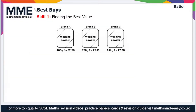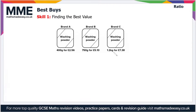Welcome to the Maths Made Easy tutorial on best buys. Best buys is all about finding the best value for money. Usually we're given a situation where the same product is on sale at multiple different prices and weights, and we have to work out which one has the lowest cost per gram or per kilogram depending on the units.